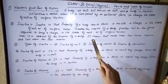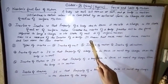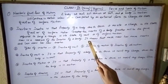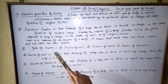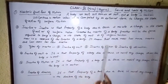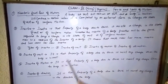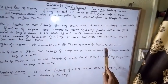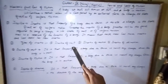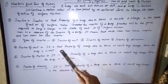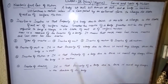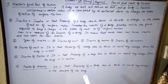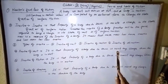5 रुपये के सिक्के का inertia 1 रुपये के सिक्के से ज्यादा होगा क्योंकि उसका mass ज्यादा है। Inertia को तीन भागों में बांटा गया है: inertia of rest, inertia of motion, और inertia of direction। Inertia of rest वह property है जो किसी वस्तु को स्थिर अवस्था में बनाए रखना चाहती है।